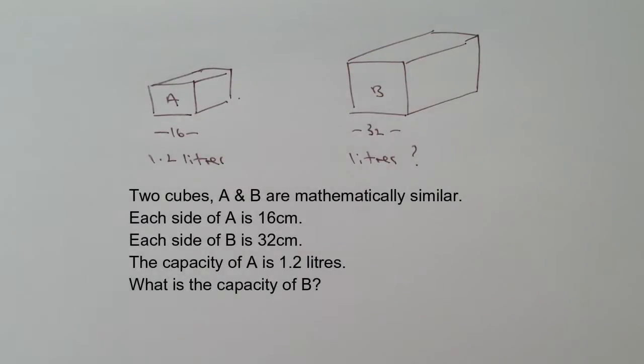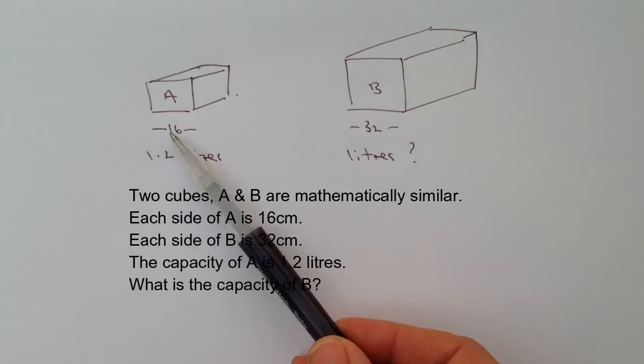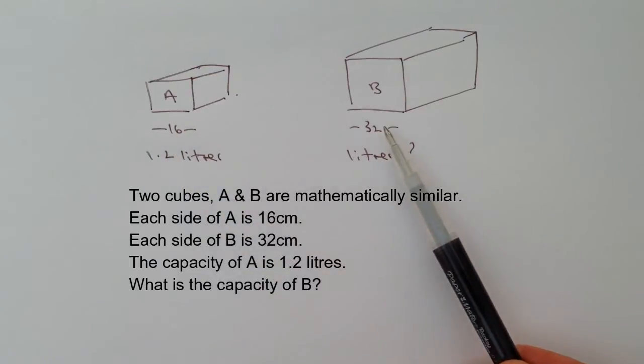OK, in this particular video we're looking at two shapes which are mathematically similar. And we're being told that the linear dimension along here is 16 and the linear dimension along here is 32.